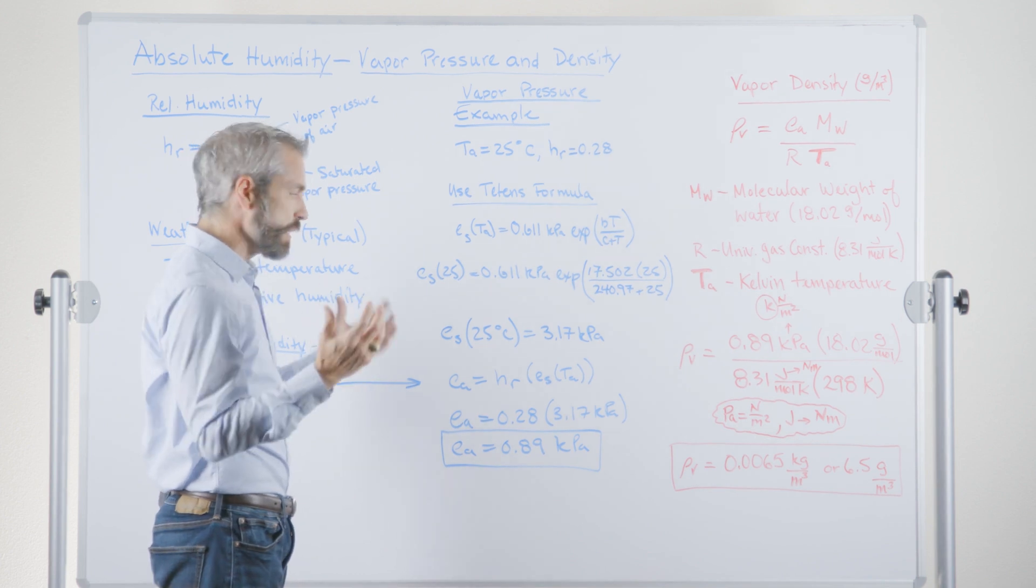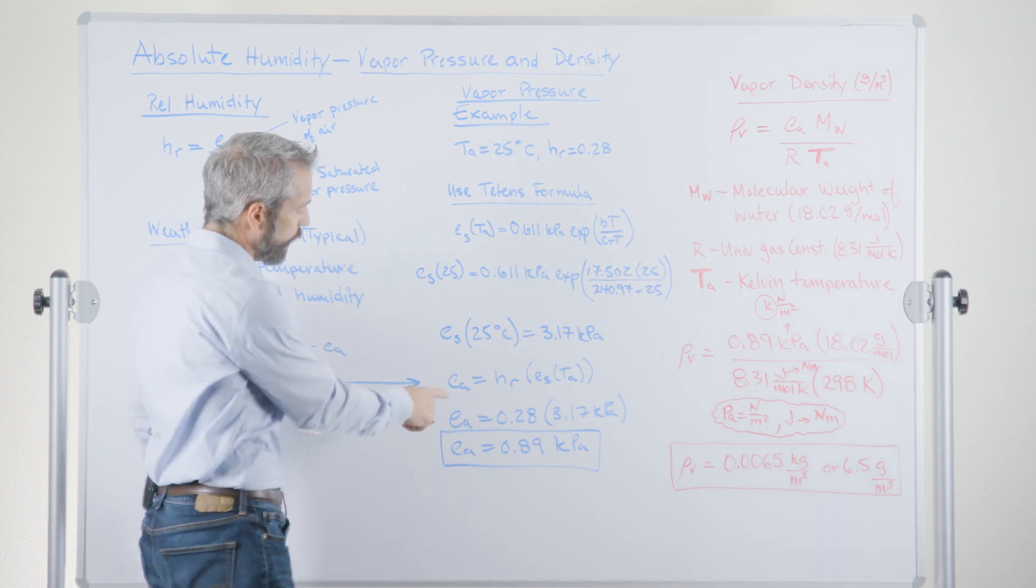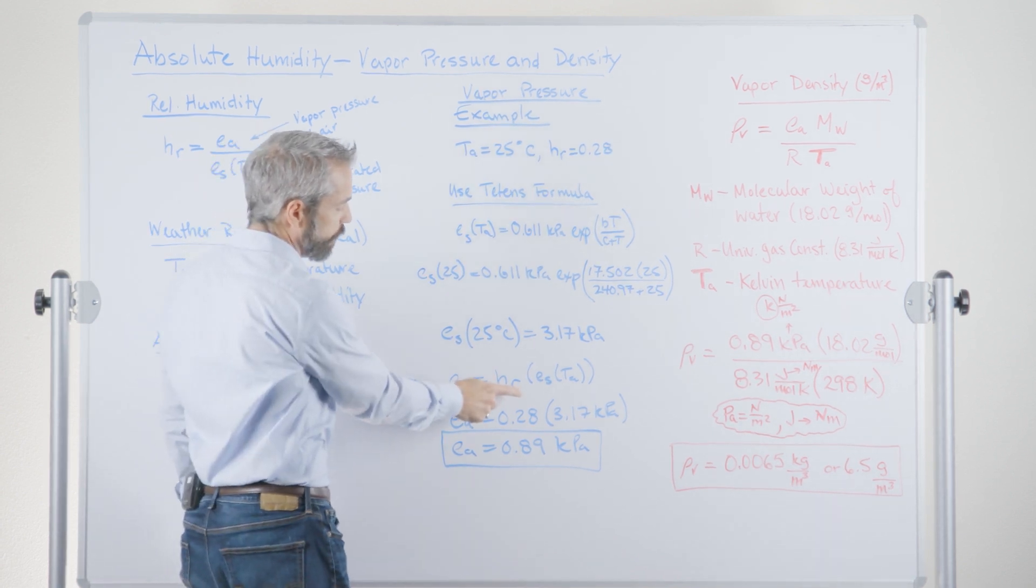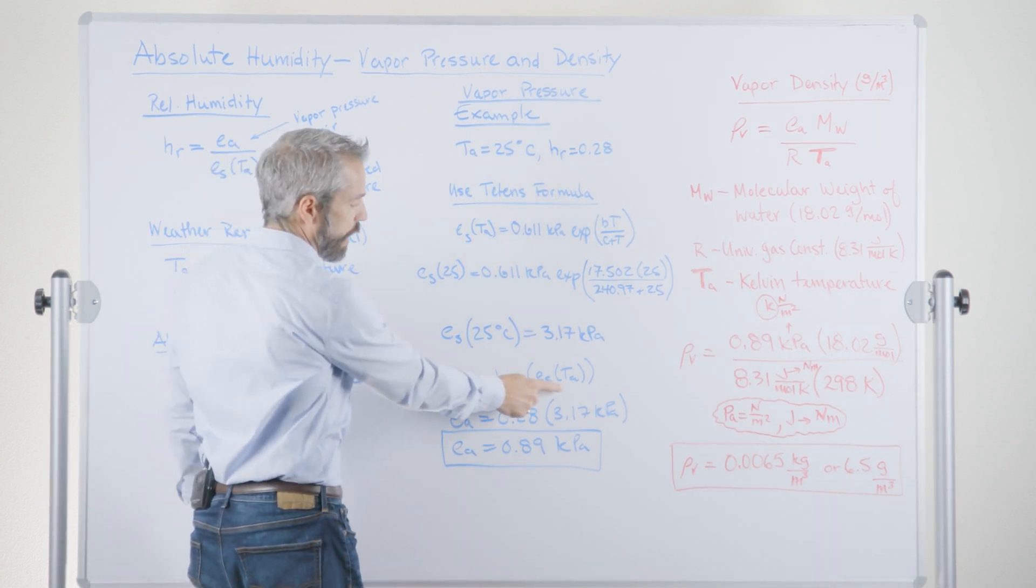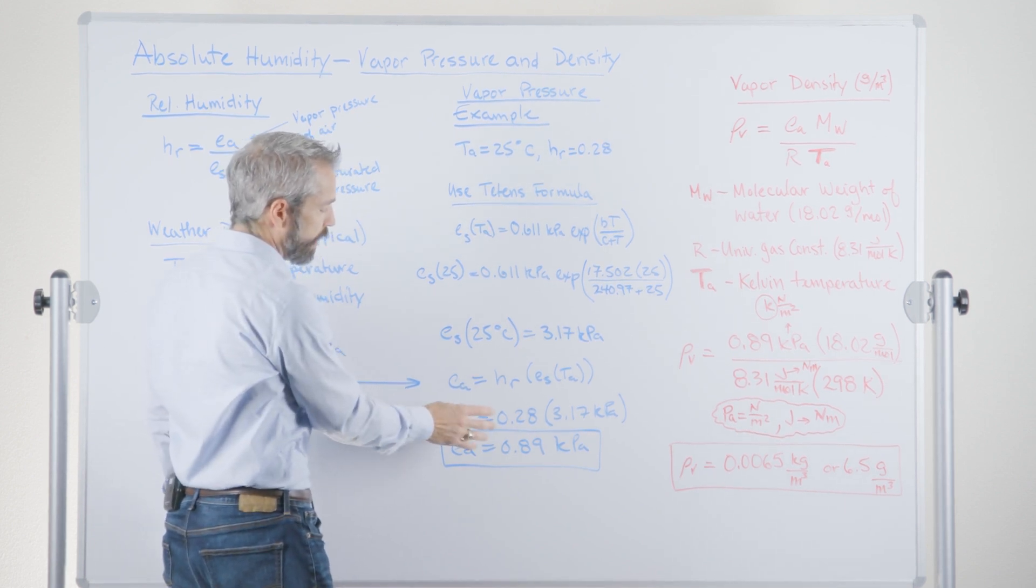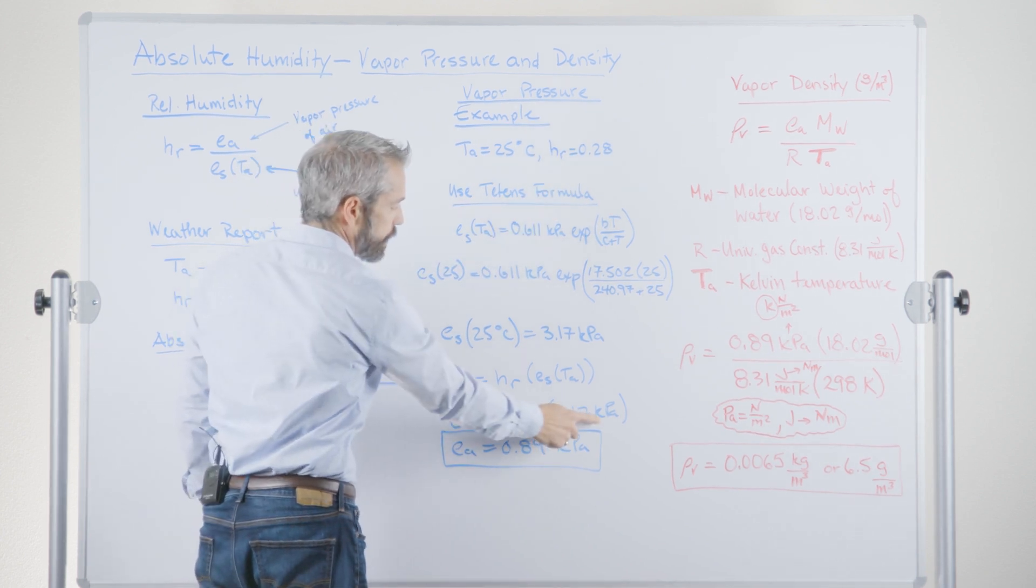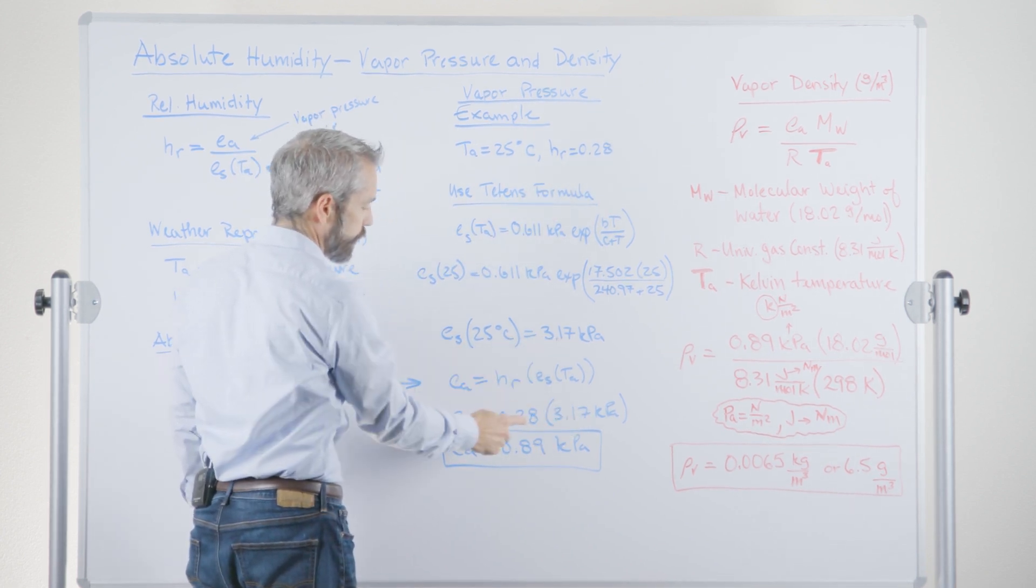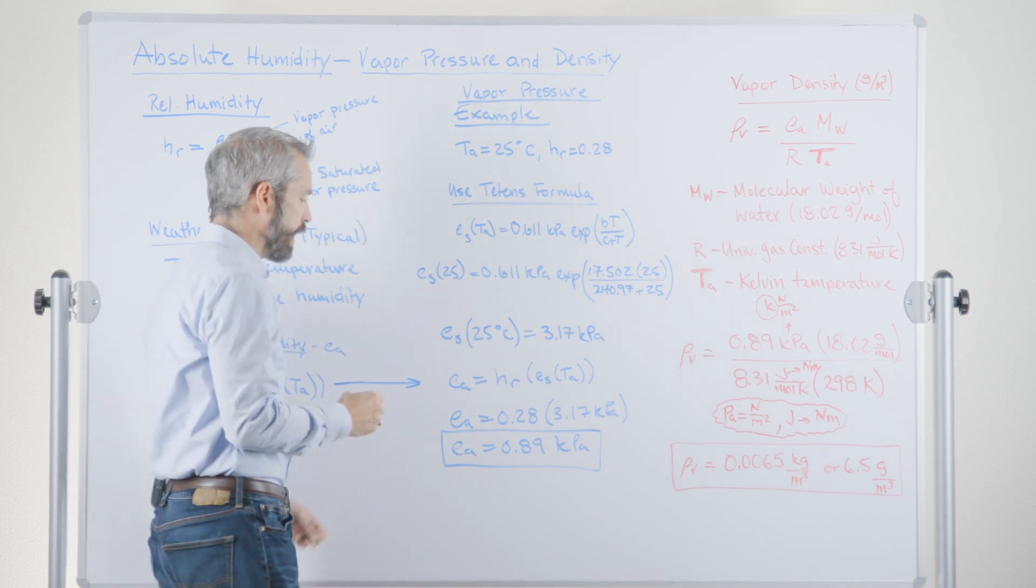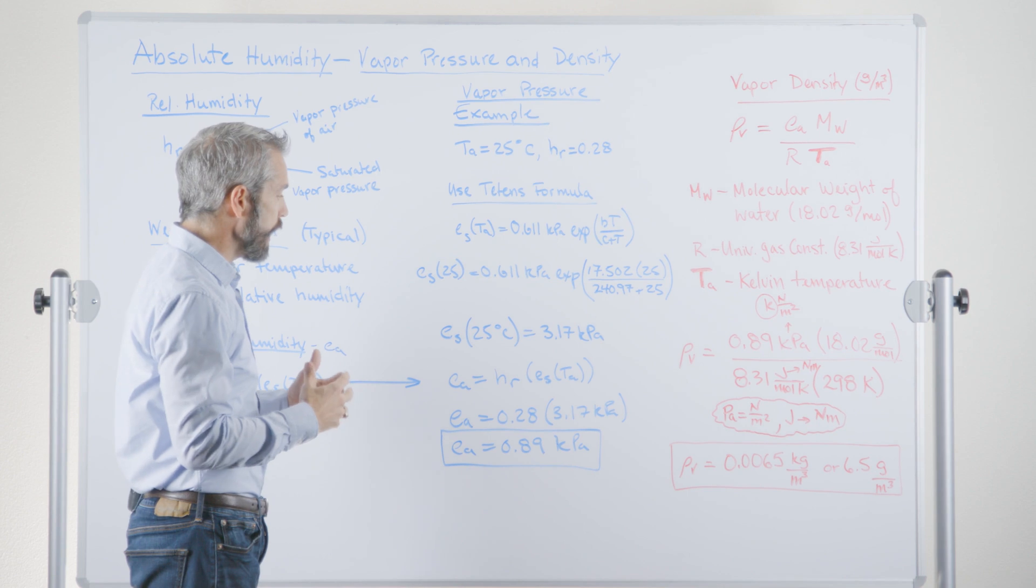So we're not done yet. We have to go back to this equation I showed you just a minute ago that says the vapor pressure is equal to the relative humidity times the saturation vapor pressure. So when we plug our data in, that's here, the relative humidity, 0.28, times the saturation vapor pressure that we calculated right here, and we get a vapor pressure of 0.89 kilopascals.